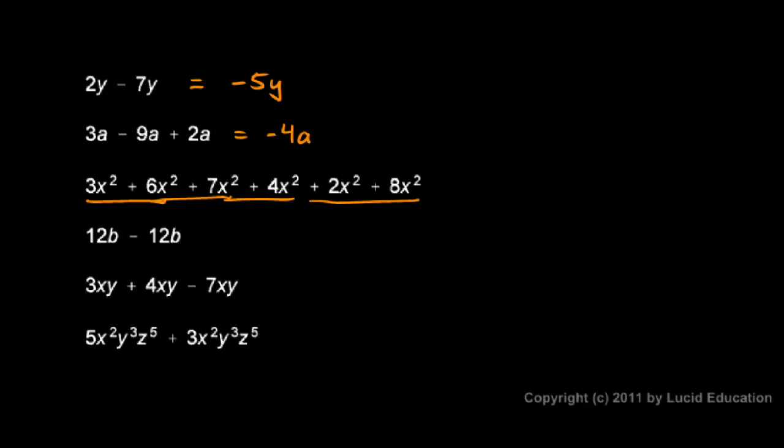And then plus 2 and plus 8, you can probably see that the 8 and the 2 add up to 10. So that gives me a total of 30x squared. These are all x squared terms, so they can all be combined into a single term.